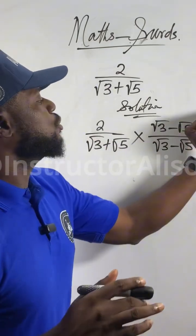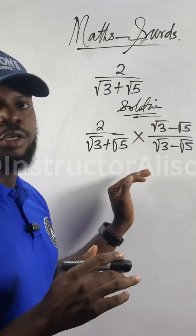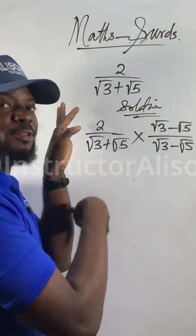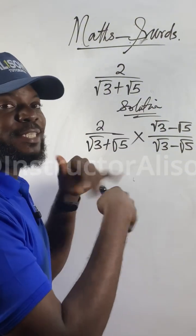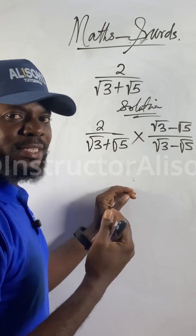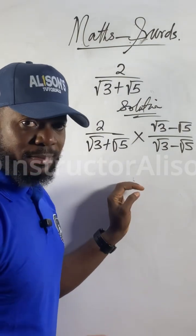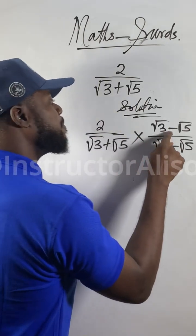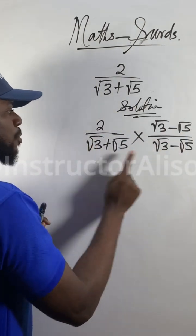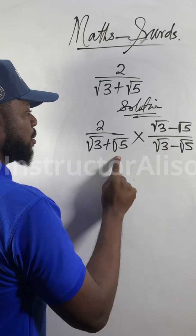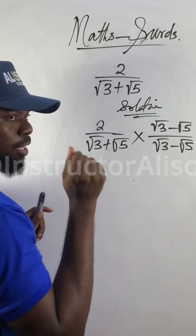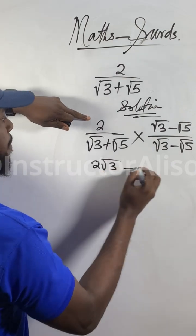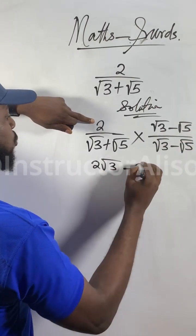Now what you want to do: multiply the numerator — use the numerator, multiply the numerator; use the denominator. Two will go multiply this root three, and two will still multiply this minus root five. Similarly, this one will multiply this one and still multiply this one. Two times root three gives us two root three, minus two times root five gives us two root five.